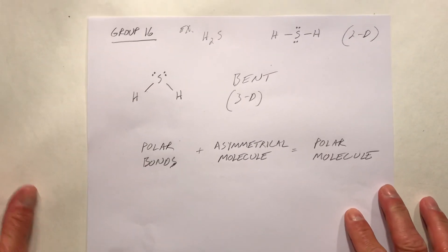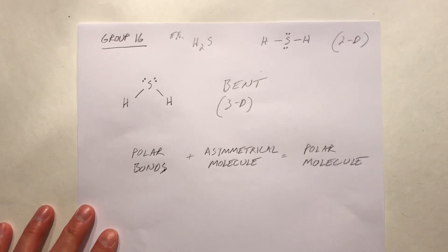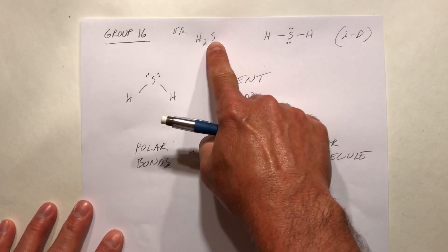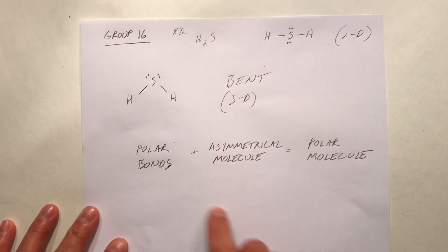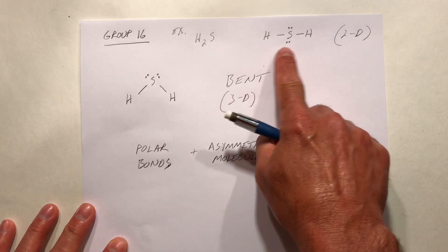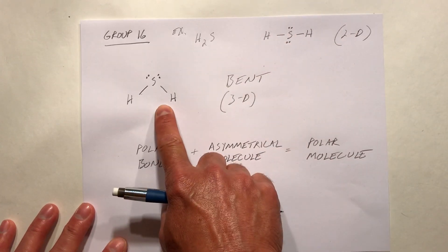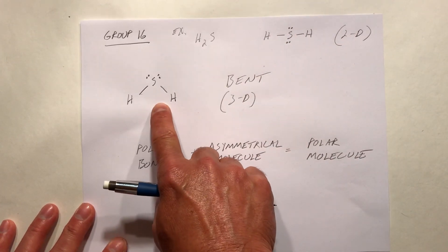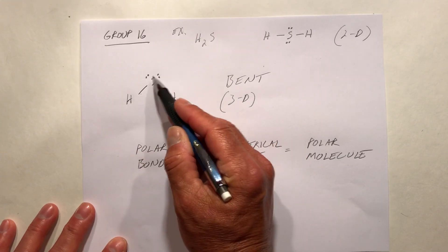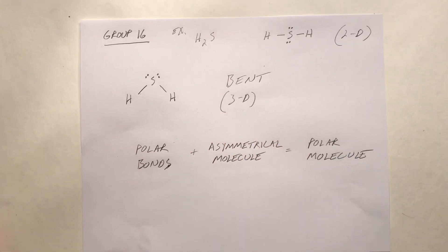For a group 16 element, sulfur at the center of a molecule bonded to two hydrogens — in two dimensions it looks like this, and in three dimensions it looks like this. Notice these non-bonding electrons on the sulfur actually take up some space.